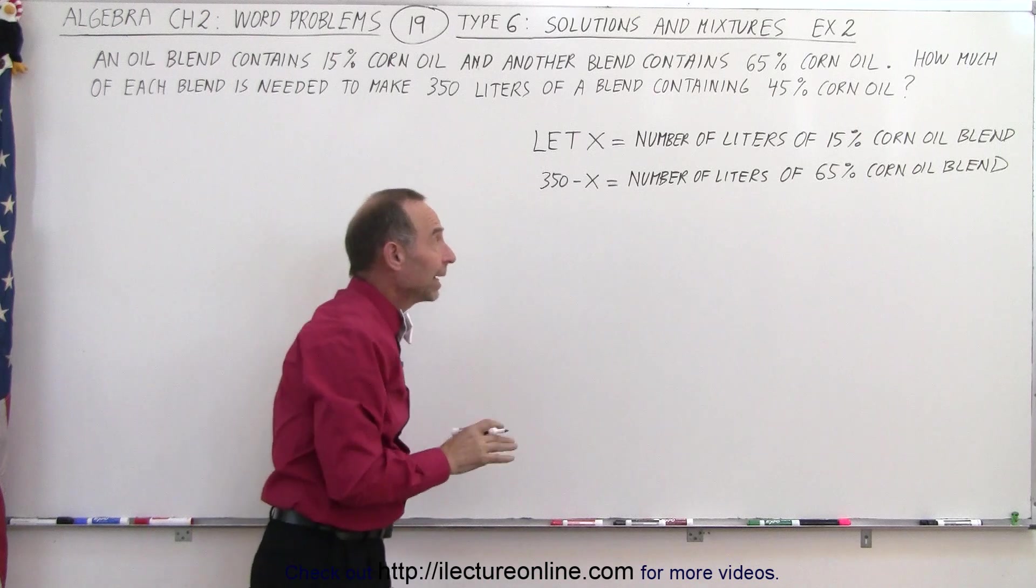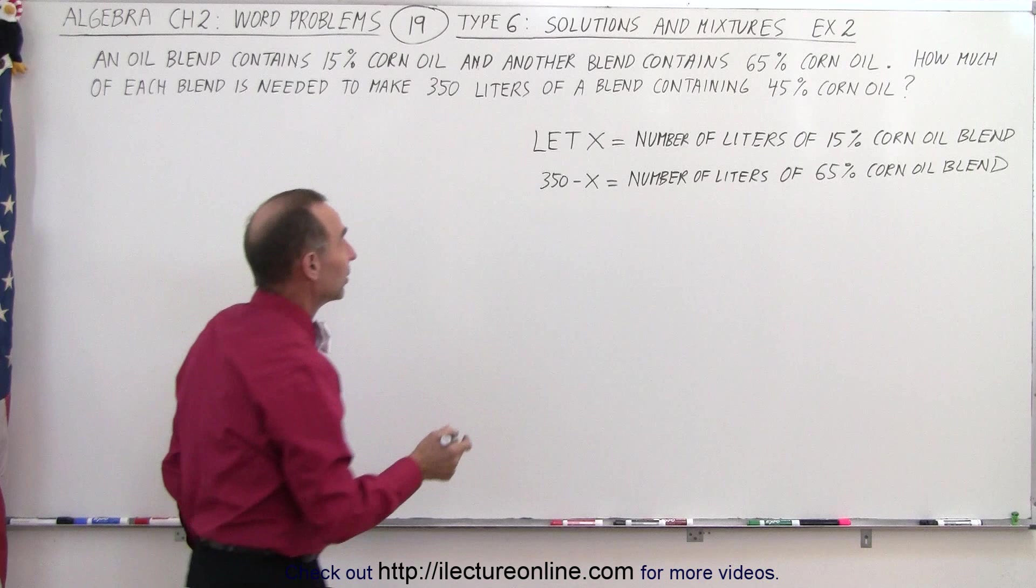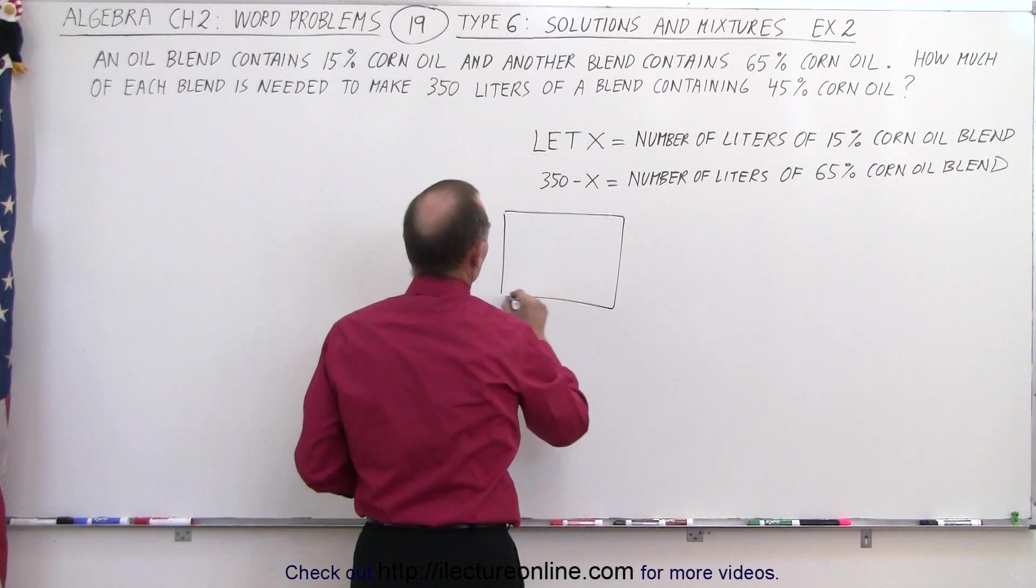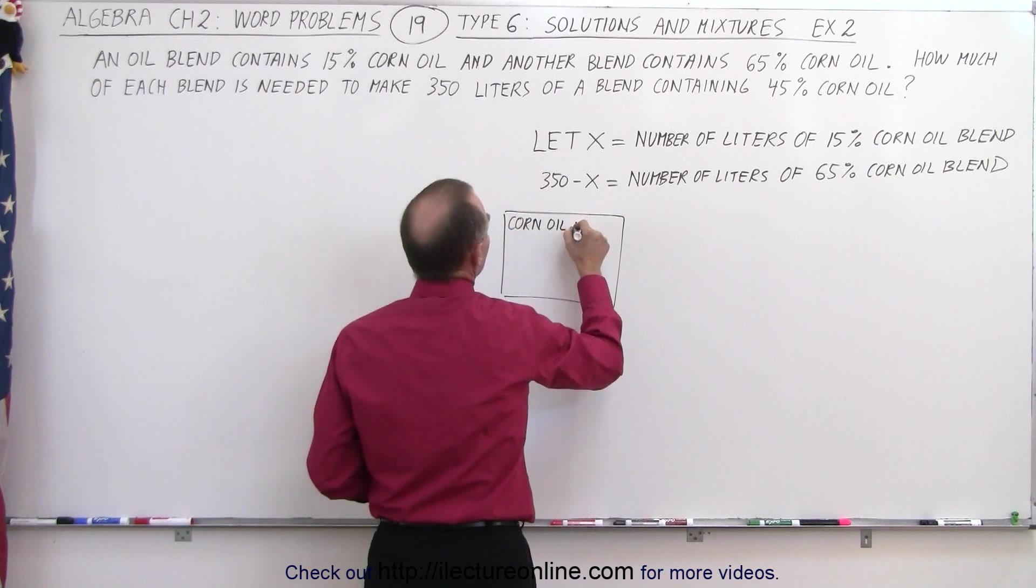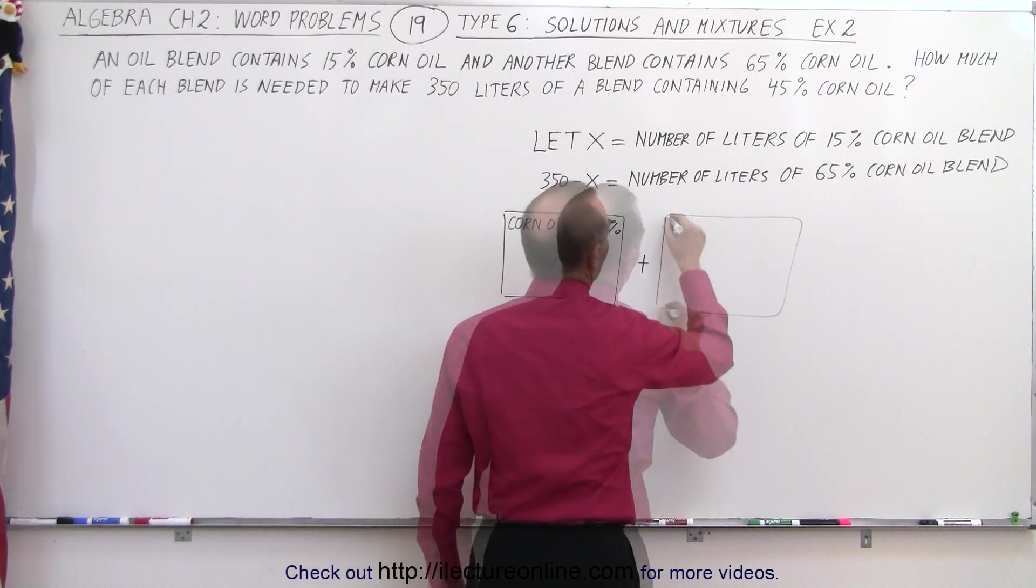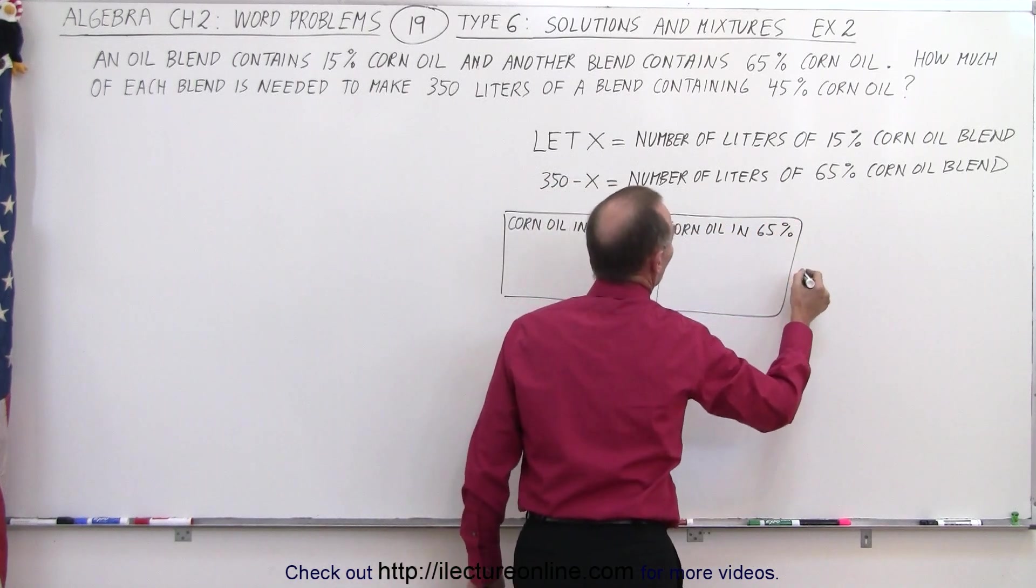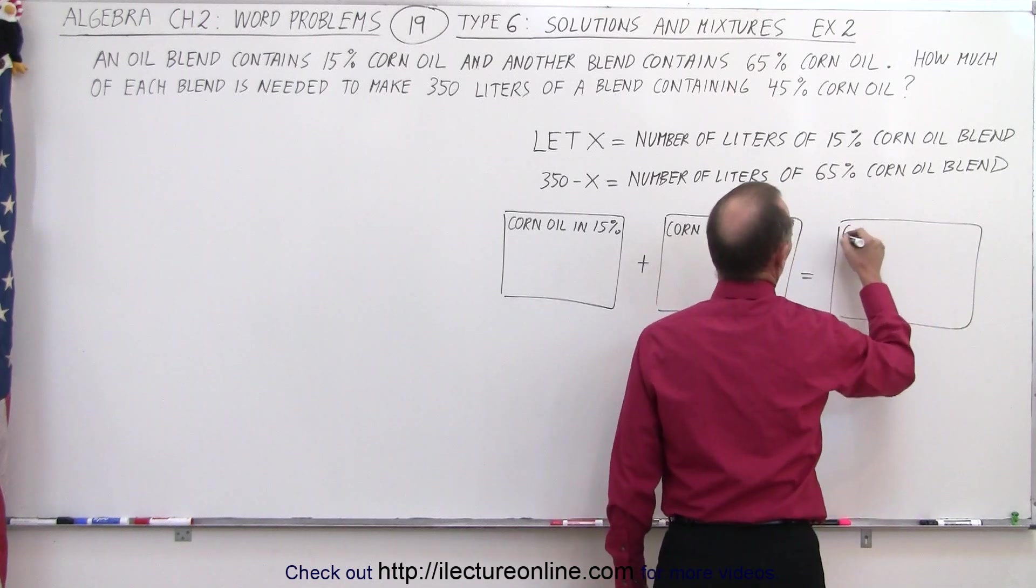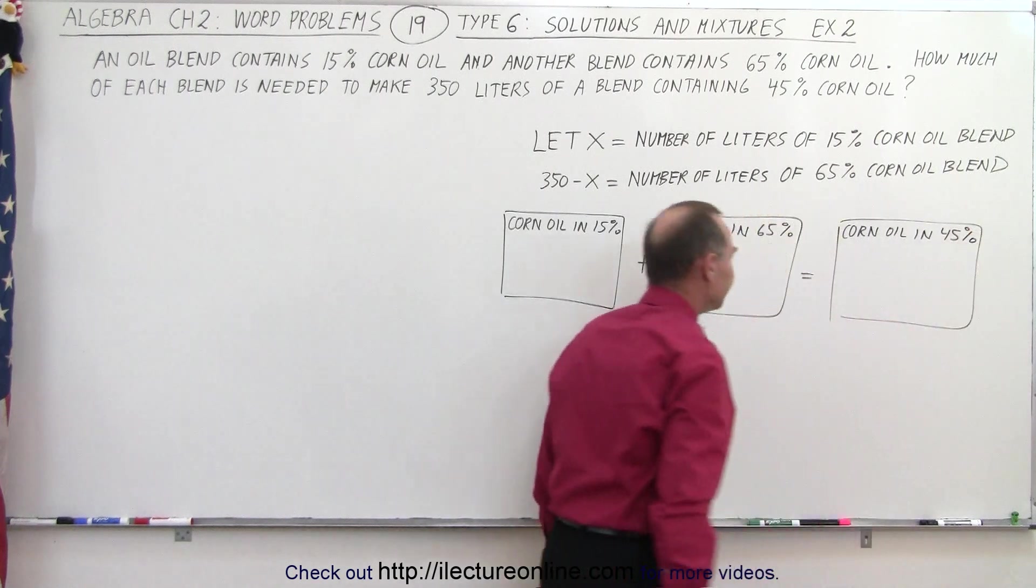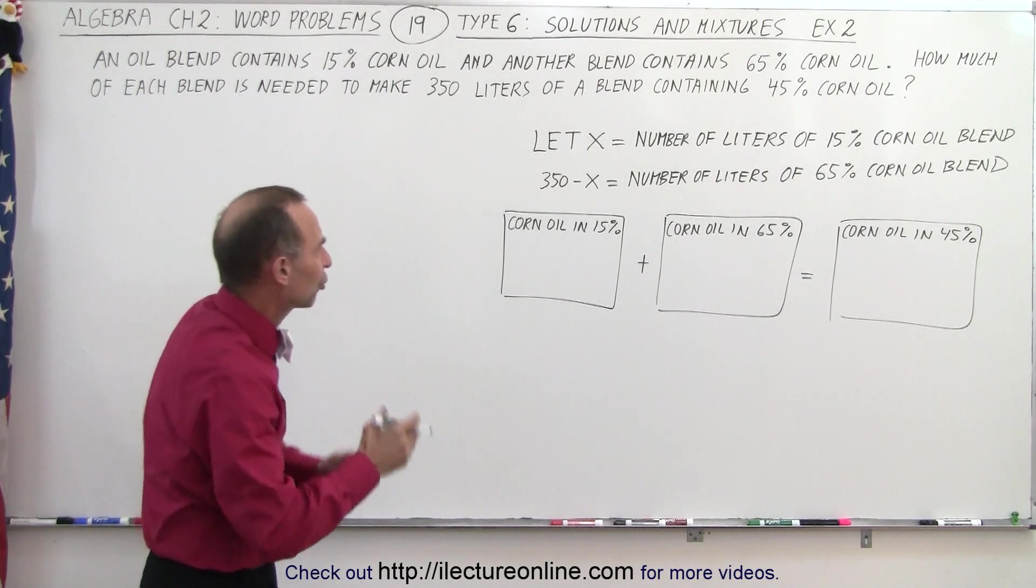So now we have the amount of each of the blends in terms of x. Now we need to come up with an equation. Again, the approach will be the same. We're going to keep track of the amount of corn oil that we have. So in this case, it'll be the corn oil in the 15% solution plus the corn oil in the 65% solution will be equal to the corn oil in the 45% blend. How do we do that? We multiply the number of liters by the percentage corn oil.